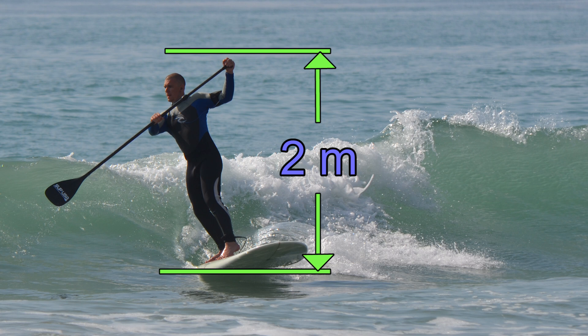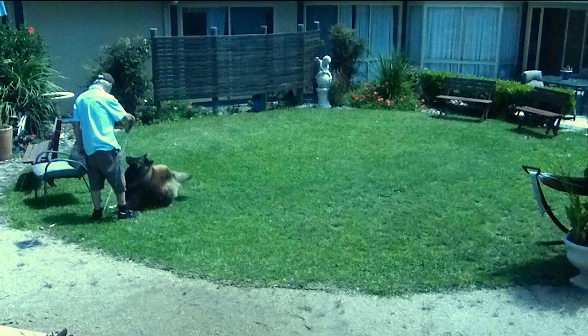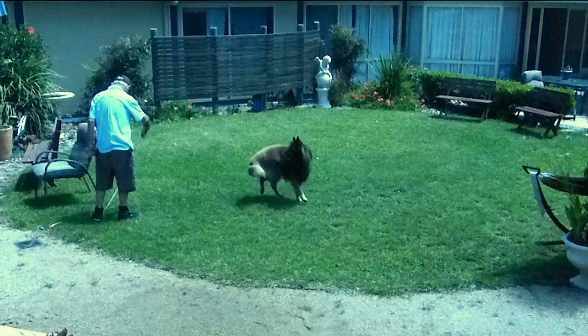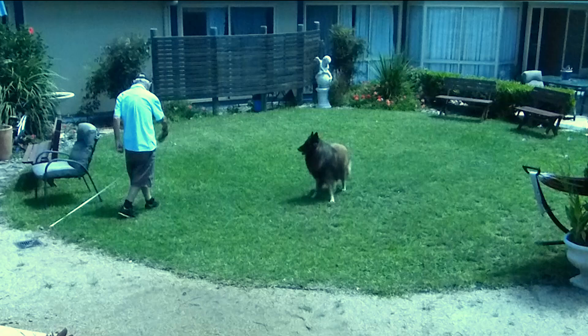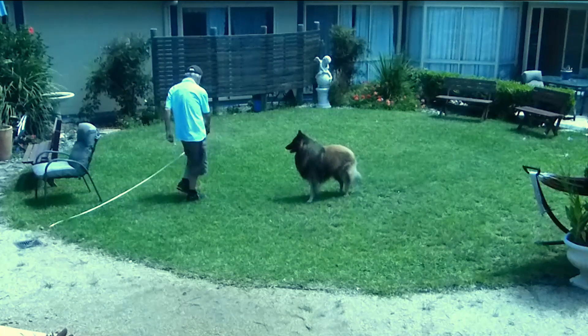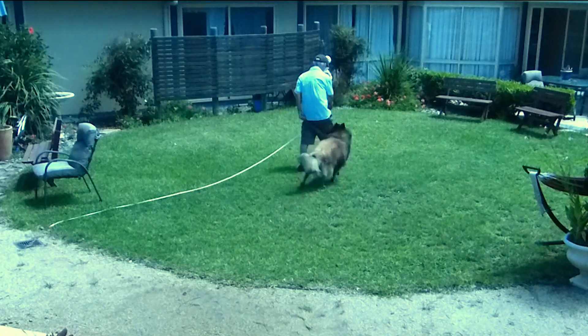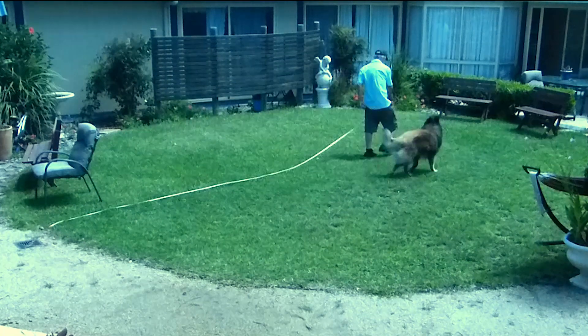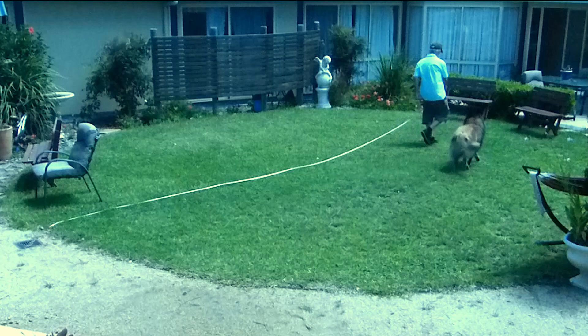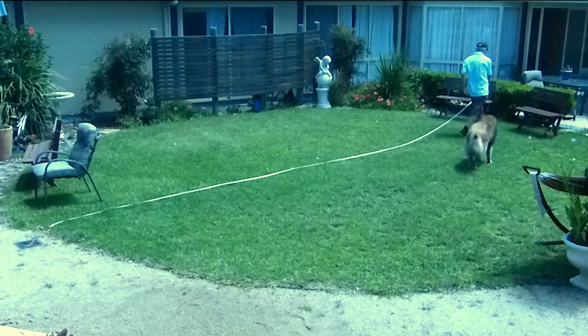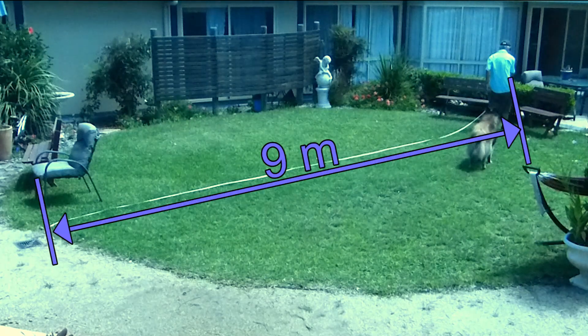Most adults are less than 2 meters high. How far is it across this patch of grass? It is 9 meters.